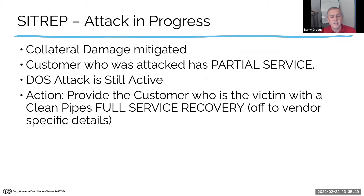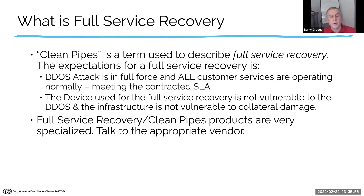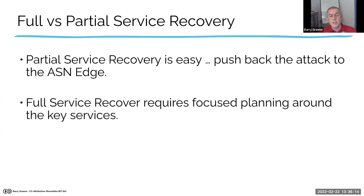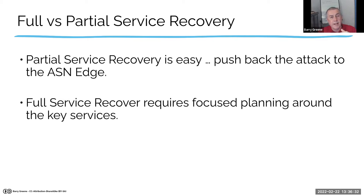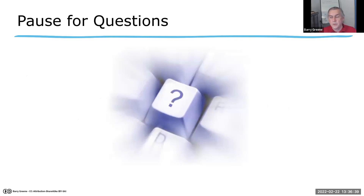From partial service — attack still going — you move to full service recovery and move it off to a clean pipe solution. A clean pipe solution is when you send it to a scrubber, a scrubbing service or scrubbing capability, whether on your network or off. Partial service recovery is when you push your block out; full service recovery is when you filter out the attack profile, clean it up, and ride out the attack while having enough capacity — that's your scrubbing capability.